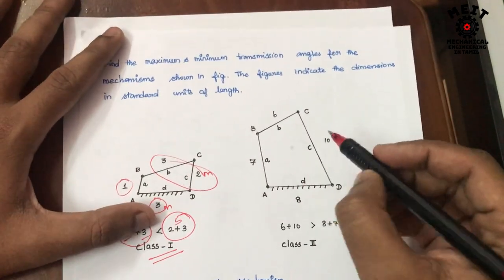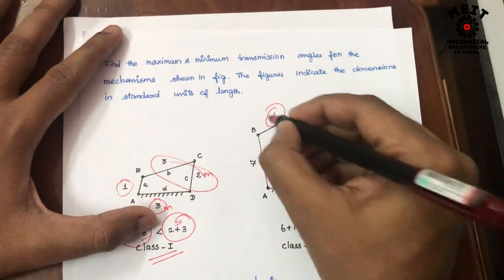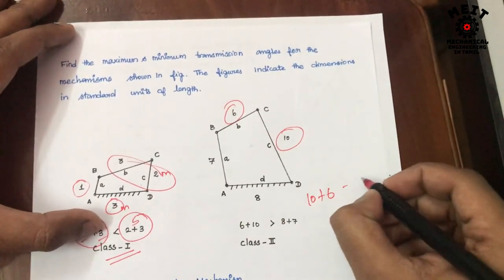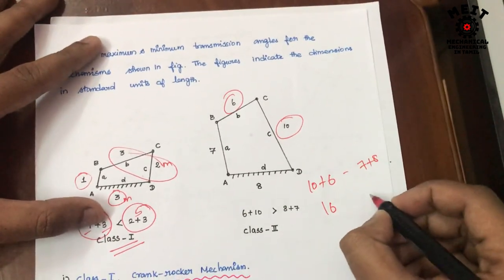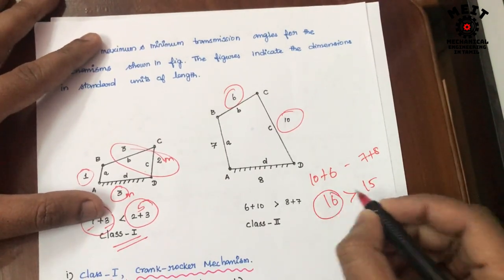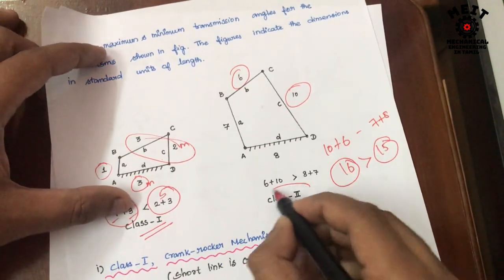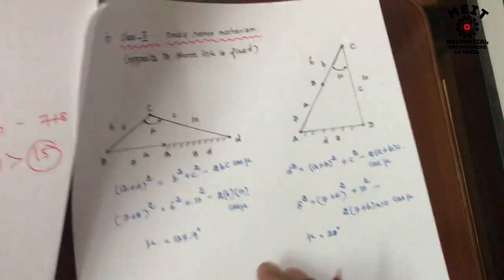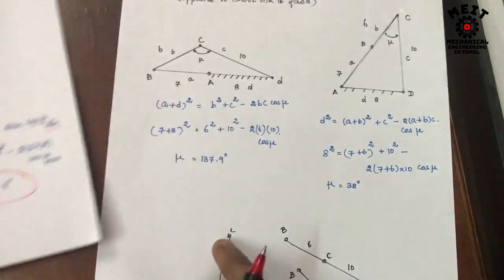For the second diagram, the longest link is 10 and the shortest is 6, so 10 plus 6 equals 16, which is greater than 7 plus 8 equals 15. Since the summation of shortest and longest is greater than the other two links, this is a Class 2 mechanism.